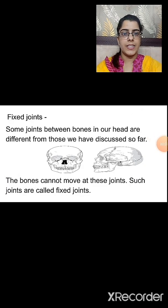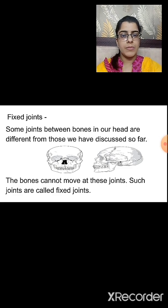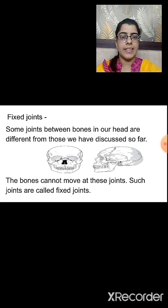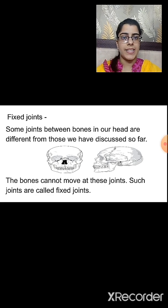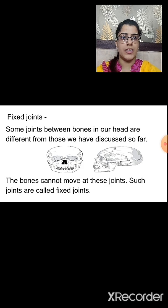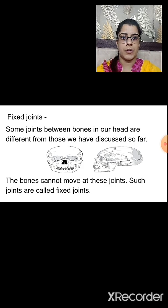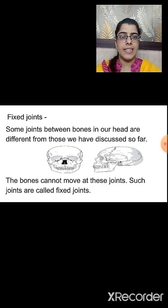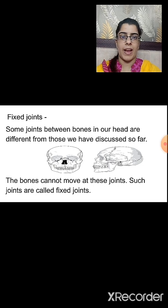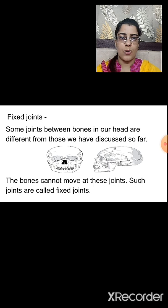Now let us study the fixed joints present in our body. Some joints between bones in our head are different from those we have discussed so far. You can see in the image that some joints are present between the bones in our head. These joints are different from the ball and socket joint, pivotal joint, and hinge joint — which all show some movement in our body. The fixed joints do not show any movement; the bones cannot move at these joints. Such joints are called fixed joints.